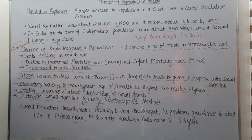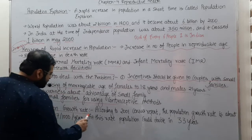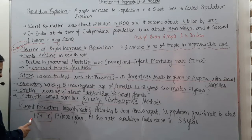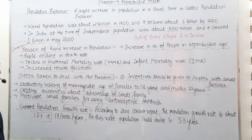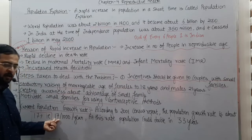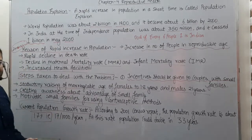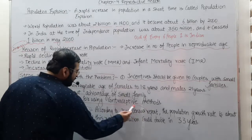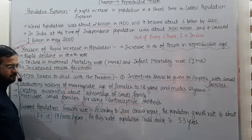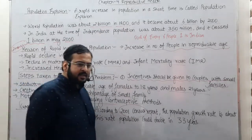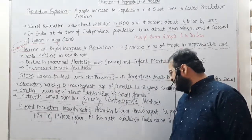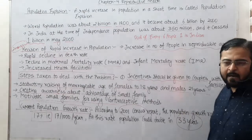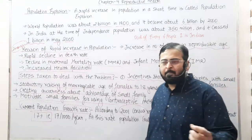Finally, the current population growth rate is 1.7%, meaning 17 new births per 1000 people per year, according to the 2001 census report. If the Indian population keeps growing at this rate, then by 2033–34 it will approximately double.